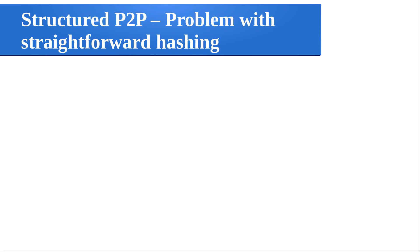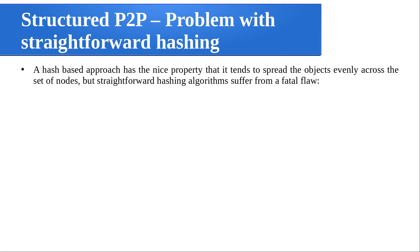What we discussed is a straightforward hashing technique. But when you are using just a simple modulo-based hashing, there are certain problems. A hash-based approach has the nice property that it tends to spread objects evenly across the set of nodes — apply the hash function, accordingly distribute the objects over the nodes. But the straightforward hashing algorithm suffers from a fatal flaw.